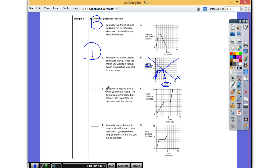How about three? You go for a jog. After a while, you meet a friend. The two of you spend some time talking. After you talk, you decide that you're going to walk home again. So first you were jogging, then you talked, then you walked home. Which one describes that story? We have A and C left. Who says A? It is A.